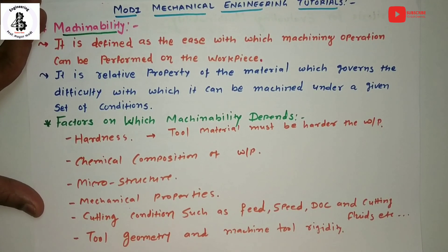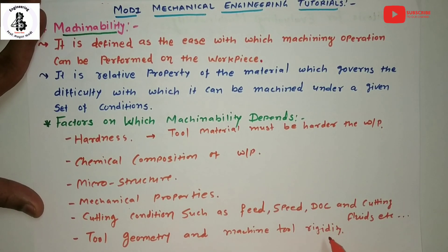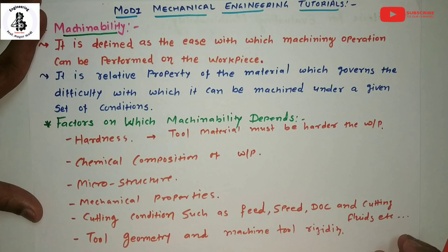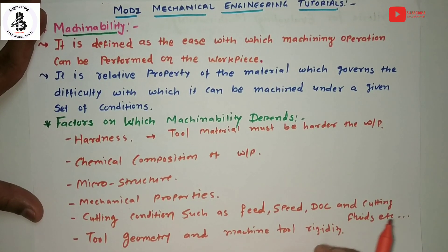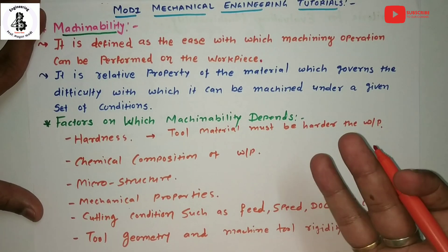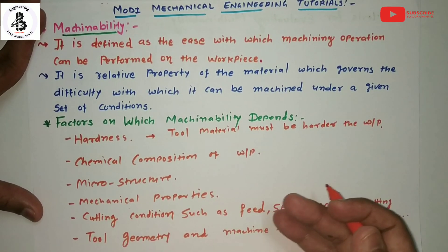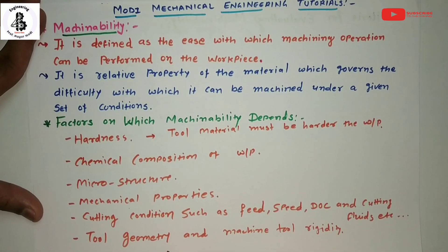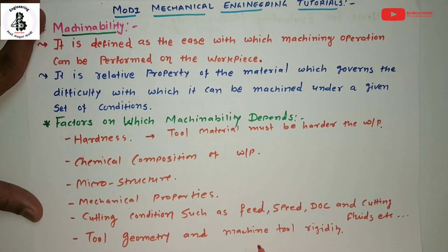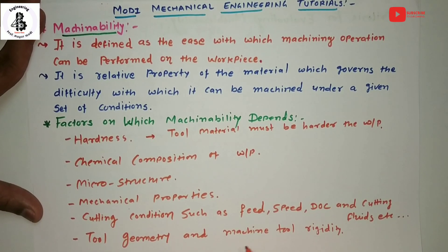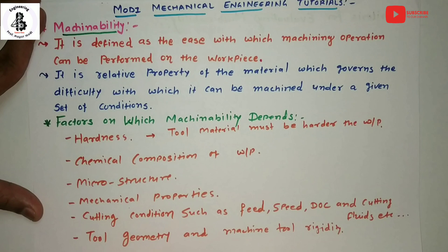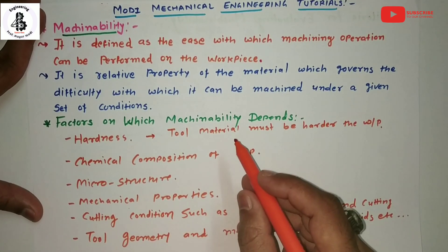The last factor is tool geometry and machine tool rigidity. During cutting operations, the machine tool must be rigid, because any vibration makes it difficult to cut the workpiece material. Tool geometry — such as the different cutting tool angles on a single point cutting tool — is an important factor on which machinability depends.